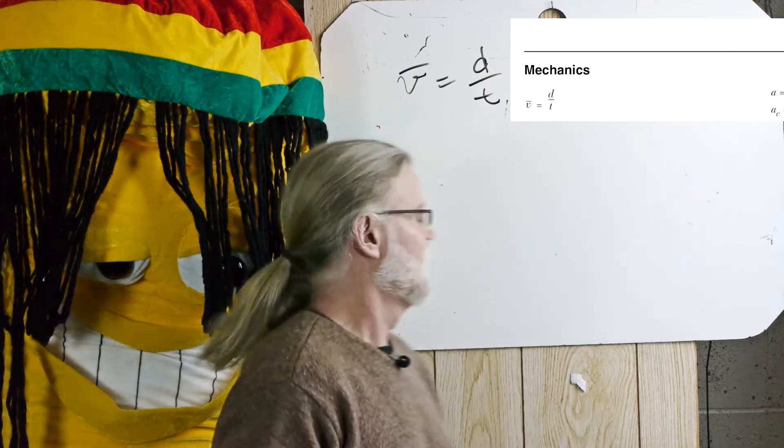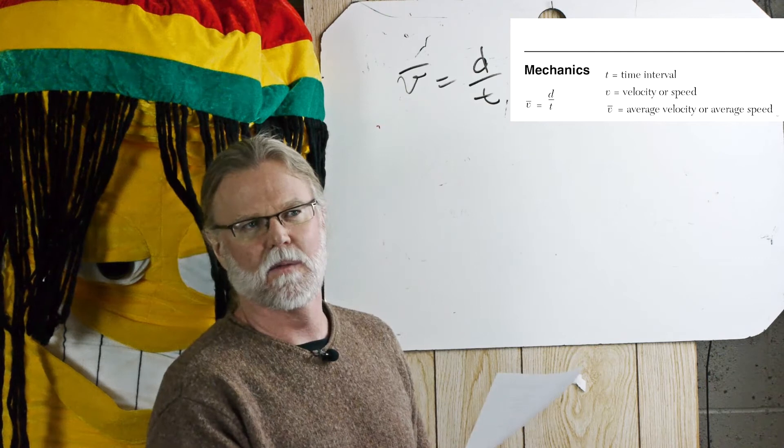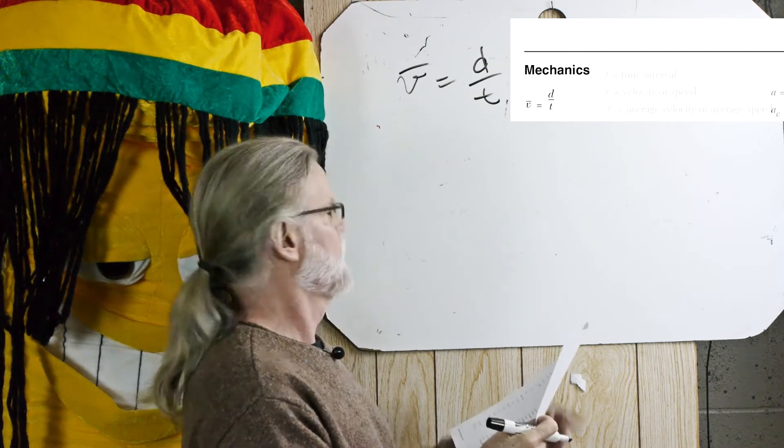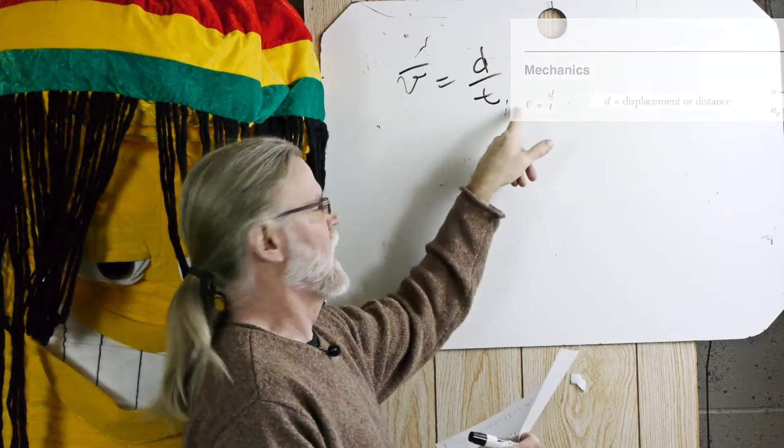Now what does that equation tell us? It tells us average speed, or is that velocity? Equals distance, or is that displacement, divided by time.